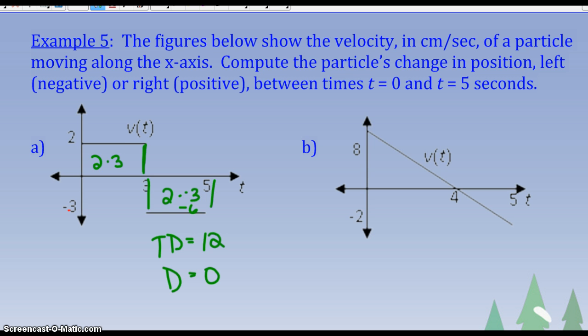You're going to look at B and do the area of the triangle. First, the displacement is 15, but the total distance is 17. So take a second to try that. Have a great night, and I'll see you guys tomorrow.